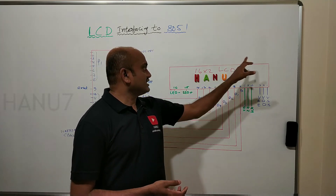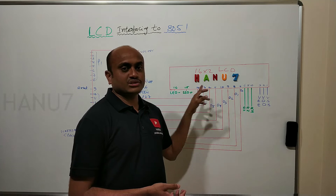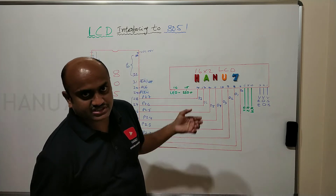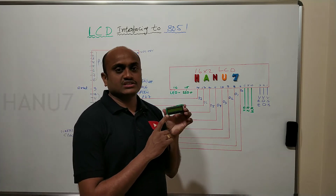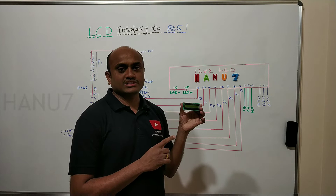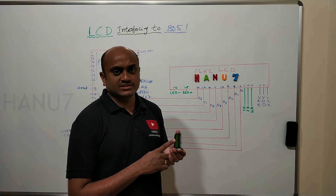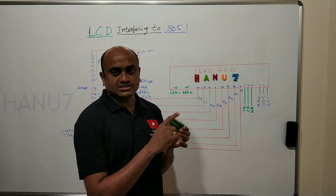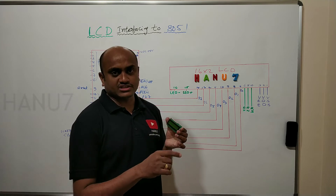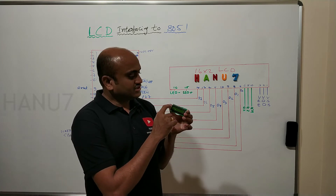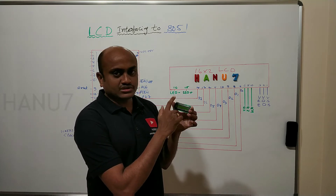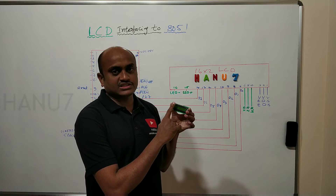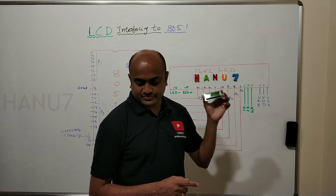This LCD is called a 16×2 LCD. It is an alphanumeric LCD with two rows and sixteen columns — this is the first row, this is the second row, and there are 16 columns. That is why it is called a 16×2 LCD.